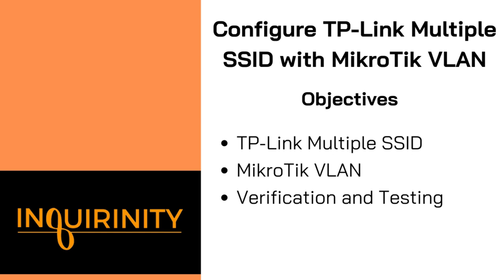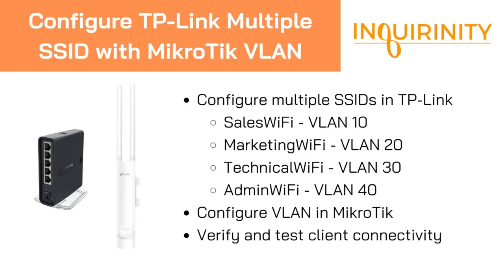We will add a DHCP server for each VLAN so when our client connects to one of the SSIDs, the client device will be able to obtain an IP address. In our demo we will have four SSIDs: sales WiFi, marketing WiFi, technical WiFi, and admin WiFi, which will be associated with VLANs 10, 20, 30, and 40 respectively. We will configure VLANs on the switch chip and DHCP server, then do some client connectivity testing.